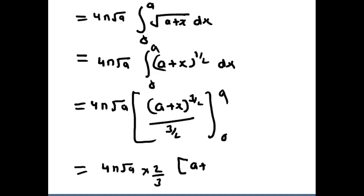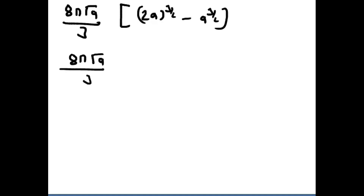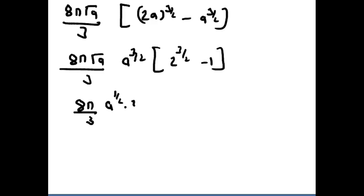Applying the limits: at x = a we get (2a)^(3/2), and at x = 0 we get a^(3/2). So the expression becomes (8π√a / 3) · [2^(3/2) · a^(3/2) − a^(3/2)]. Factoring out a^(3/2): (8π / 3) · a · a^(1/2) · a^(3/2) · (2^(3/2) − 1), simplifying to (8π/3) · a² · (2^(3/2) − 1).